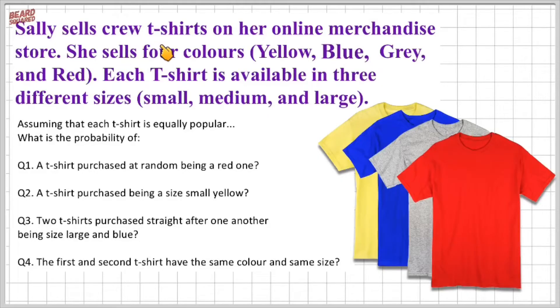So let's do the following question. Sally sells crew t-shirts on an online merch store. She sells four colors: yellow, blue, gray, and red. Each t-shirt is available in three different sizes: small, medium, and large.